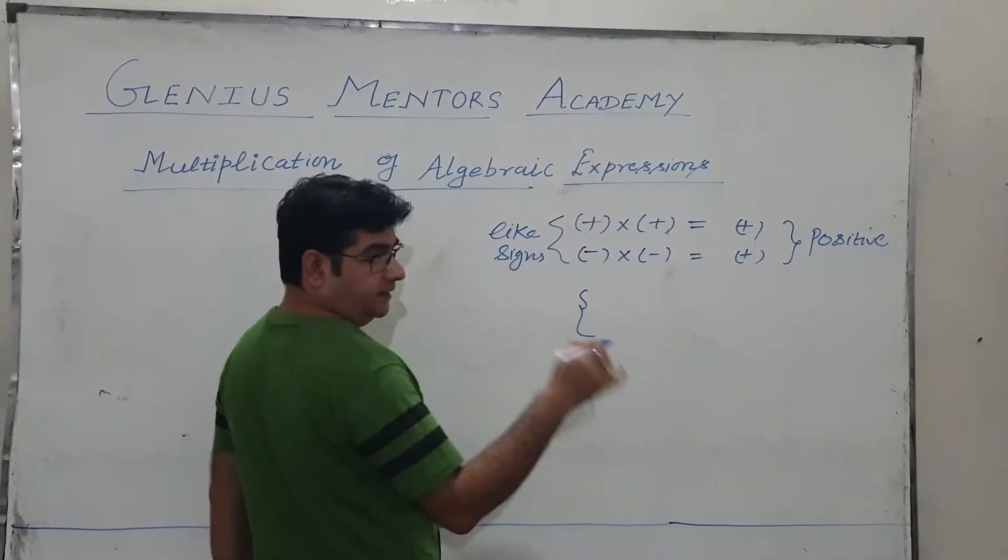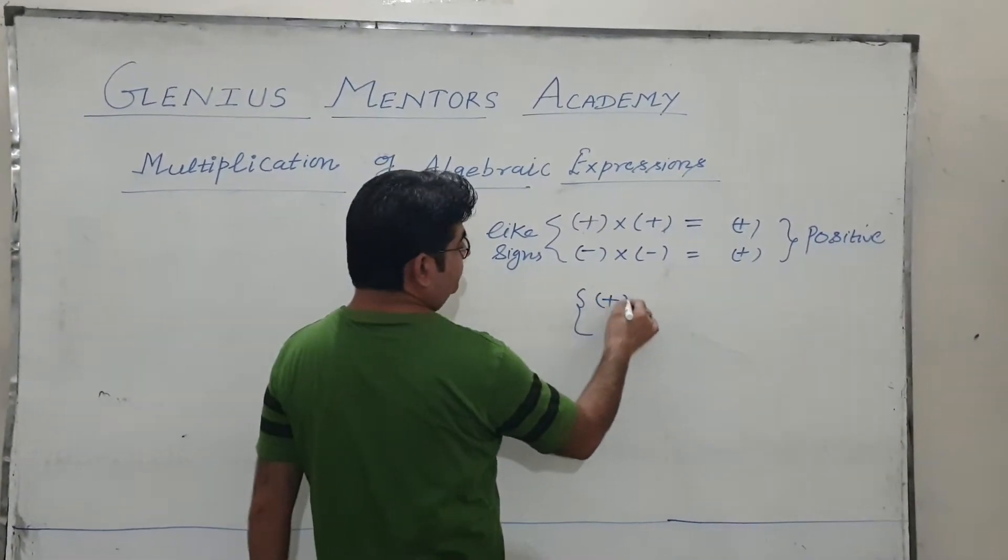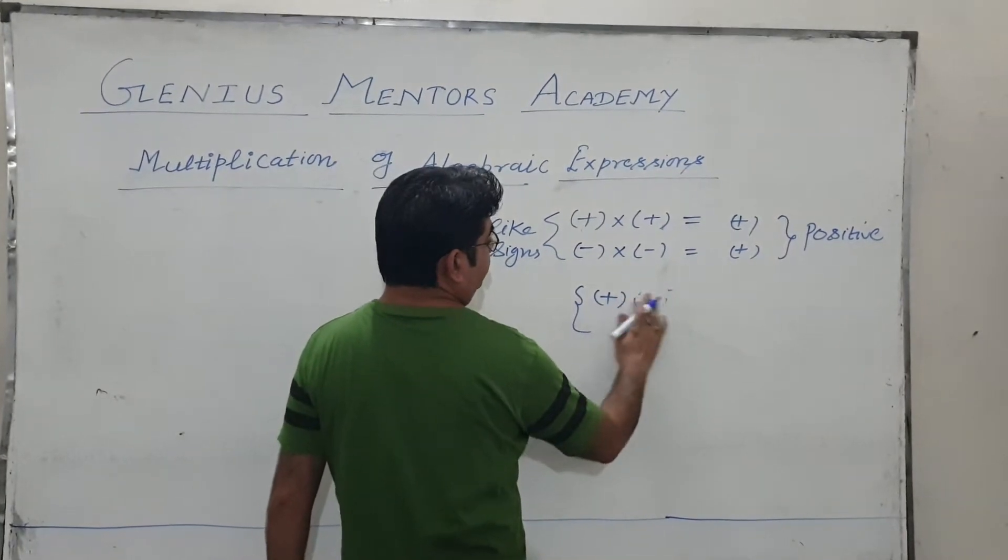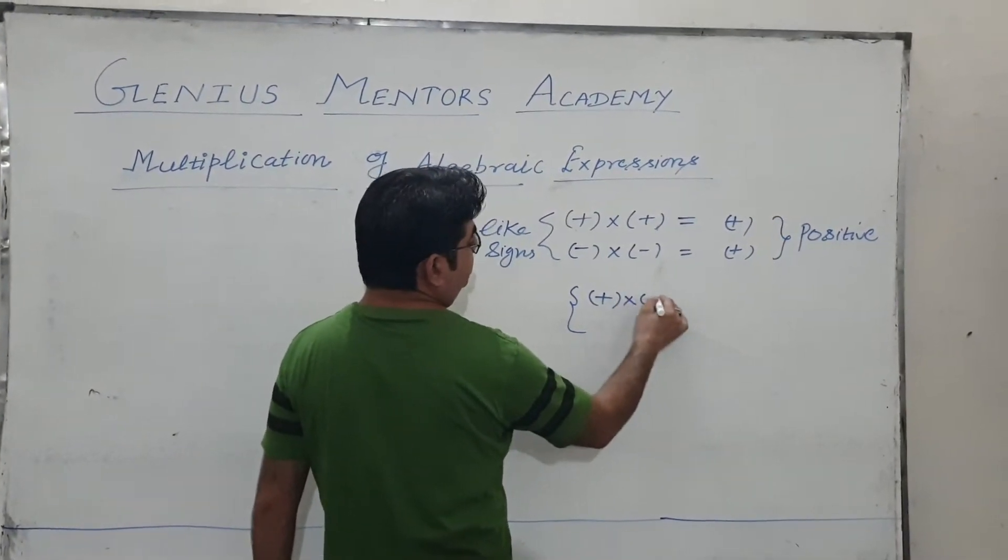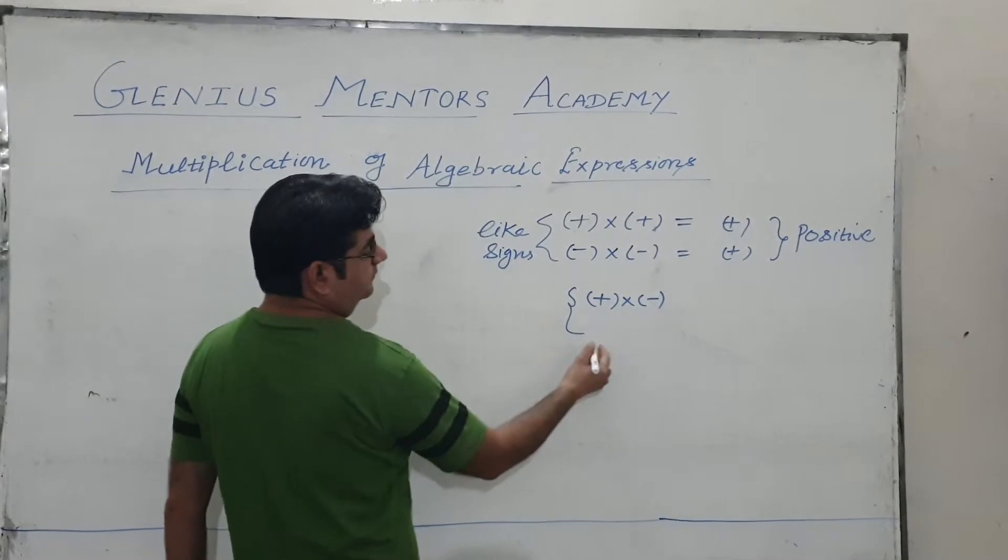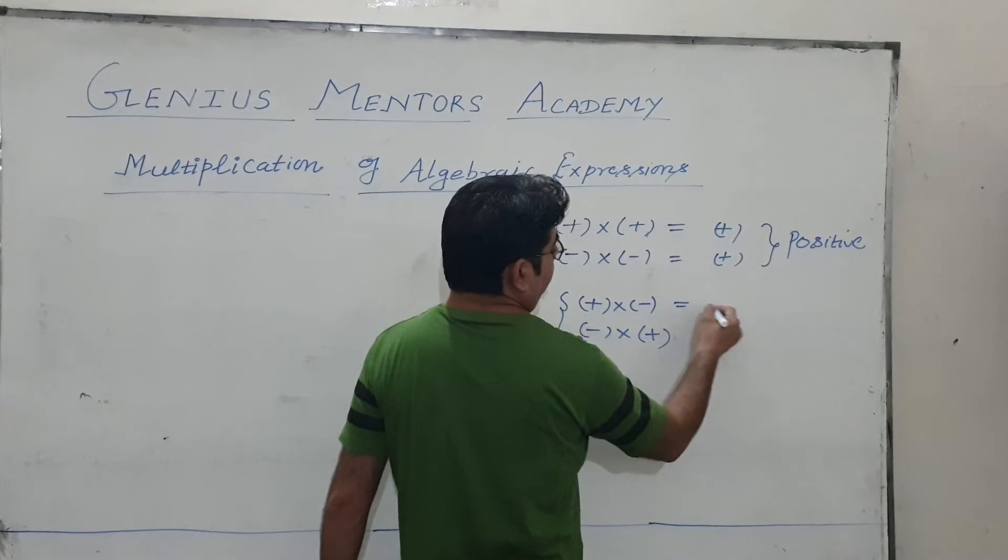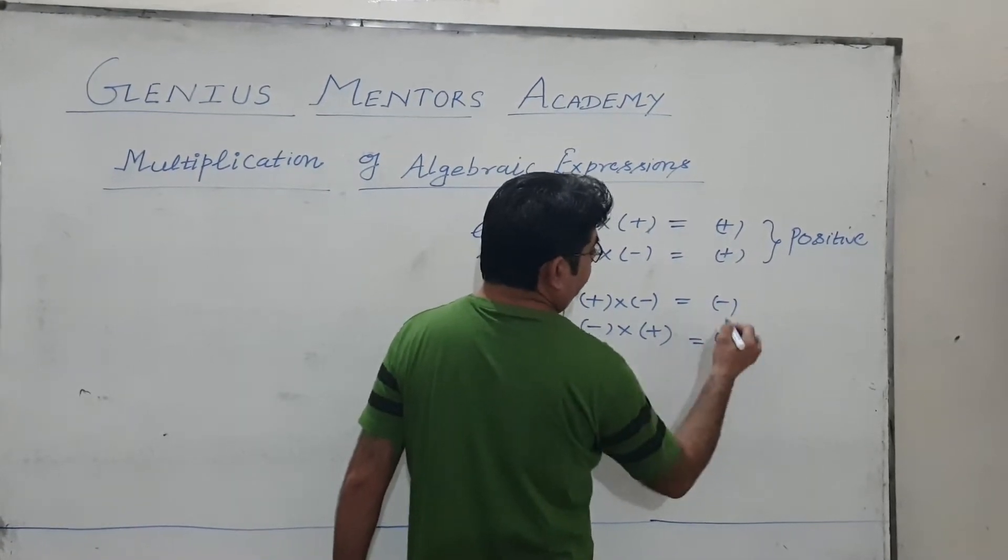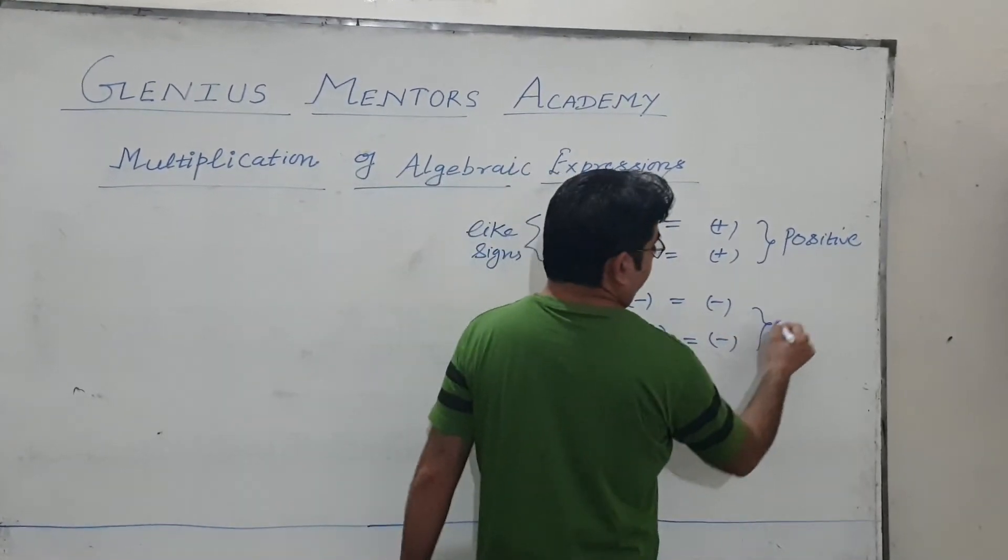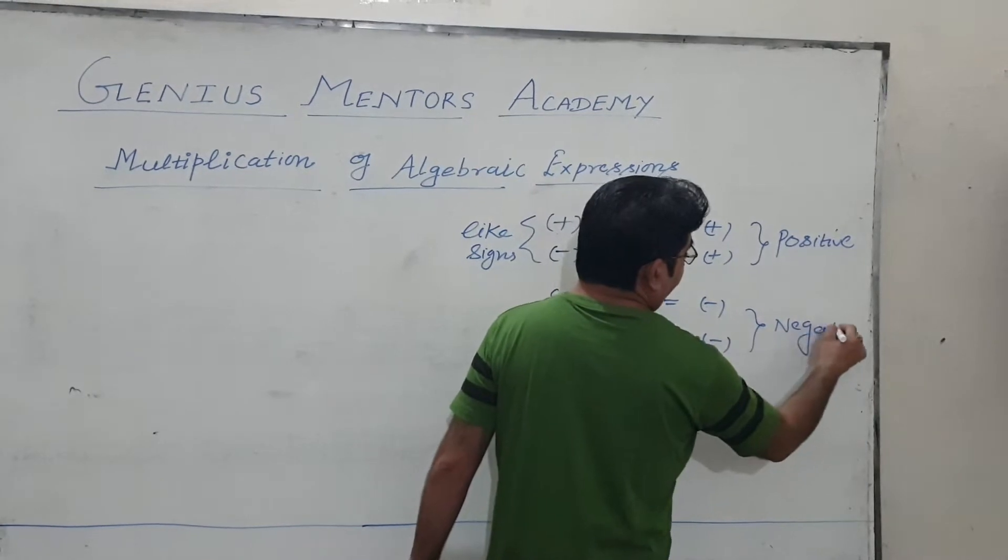When there are unlike signs, if one is positive and one is negative, that is plus into minus or minus into plus, the answer will be negative.